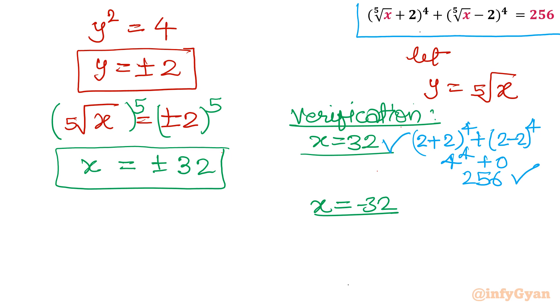Now come to negative 32. Fifth root of negative 32 is minus 2 plus 2 whole power 4 plus fifth root of negative 32, I will write minus 2 minus 2 whole power 4. Now this time this will be 0 plus minus 4 whole power 4 which will be equal to 256 as power is even. So this is also verified.